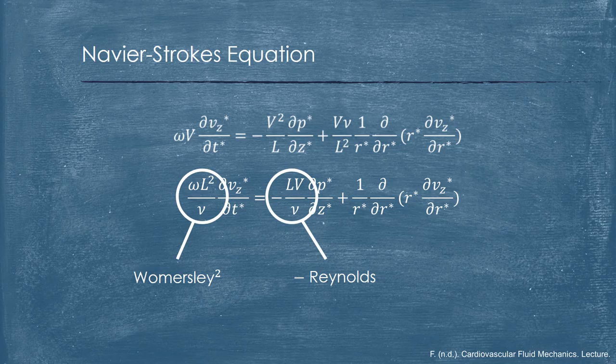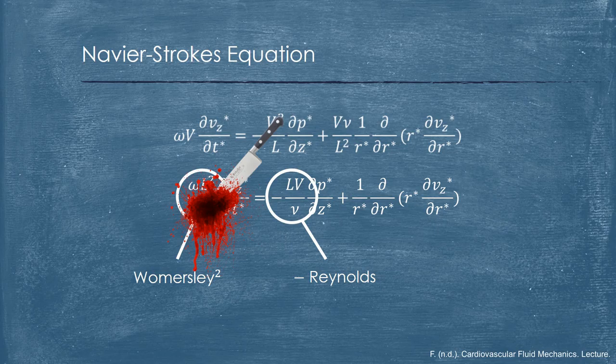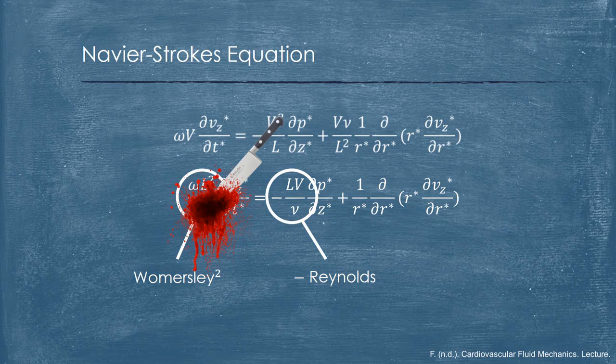In the case of steady flow, the left-hand side becomes zero. And so in conclusion, we can say the Reynolds number is controlling the steady flow part of the equation, and the Womersley number is indeed controlling the unsteady flow part of the equation.